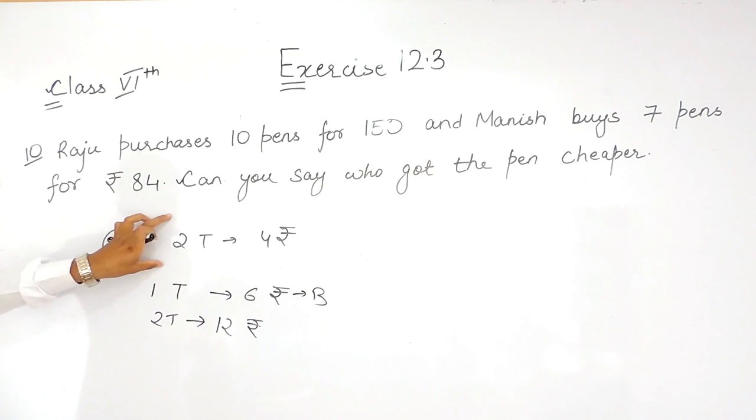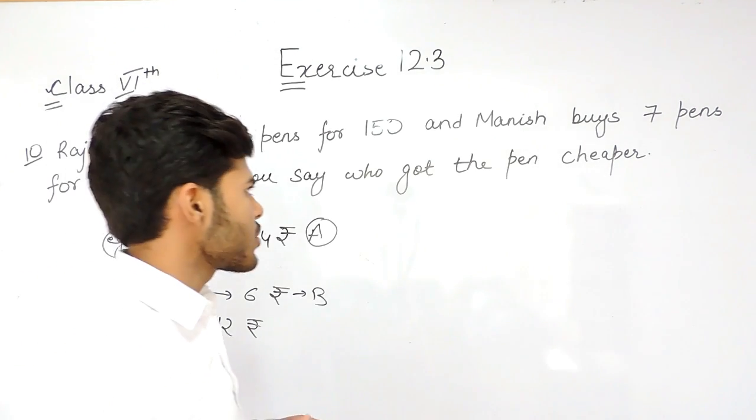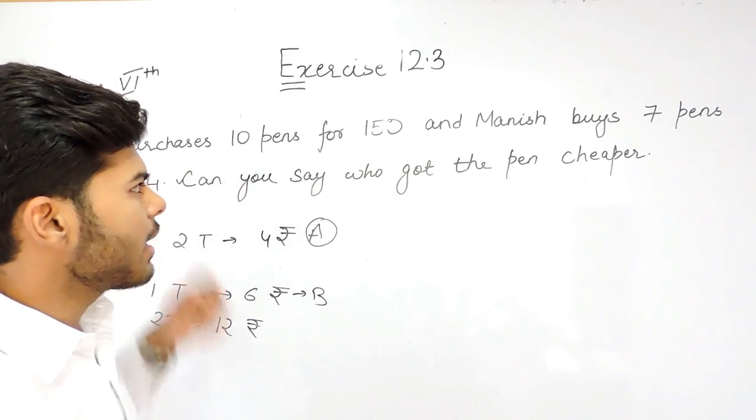So you can easily tell that toffee of type A was cheaper than type B. The simple and best way to solve these types of questions is to find the cost of 1 pen.